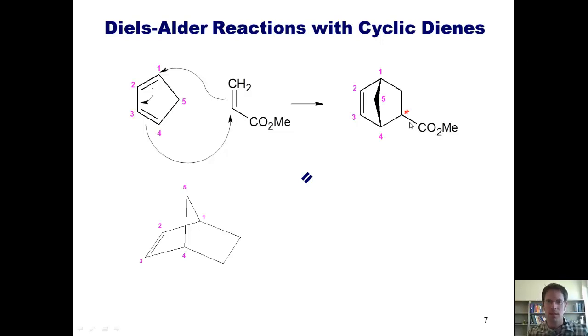The answer is both. In other words, we end up forming some of this product in which the ester is pointing down and some of this product in which it's pointing up. The product to the left is the major product being formed in 74% yield, while the one at right is the minor product being formed in 26% yield.